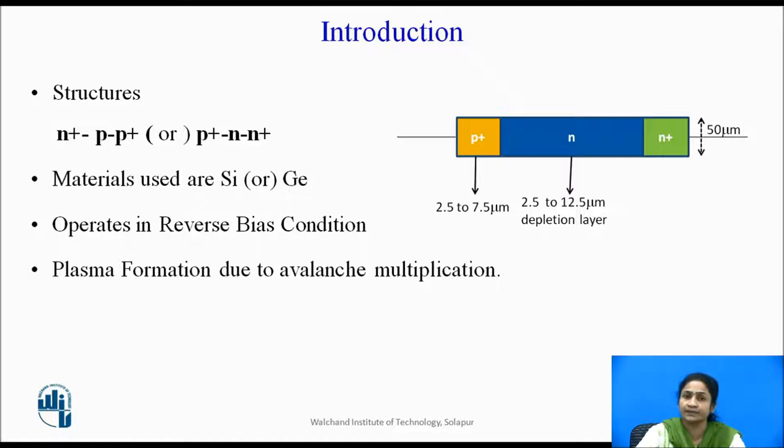Ions are more in the P type of material and electrons are in the N type of material. This plasma formation takes place due to the avalanche multiplication. Here, the avalanche multiplication forms at the depletion region,